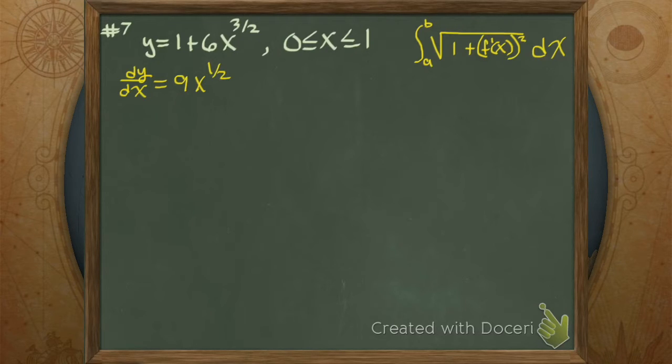I go ahead and multiply that 6 by that 3 halves. The 2 fights the 6, becomes the 3, 3 times 3 is 9, and then it's to the 1 half. Then I have the derivative.